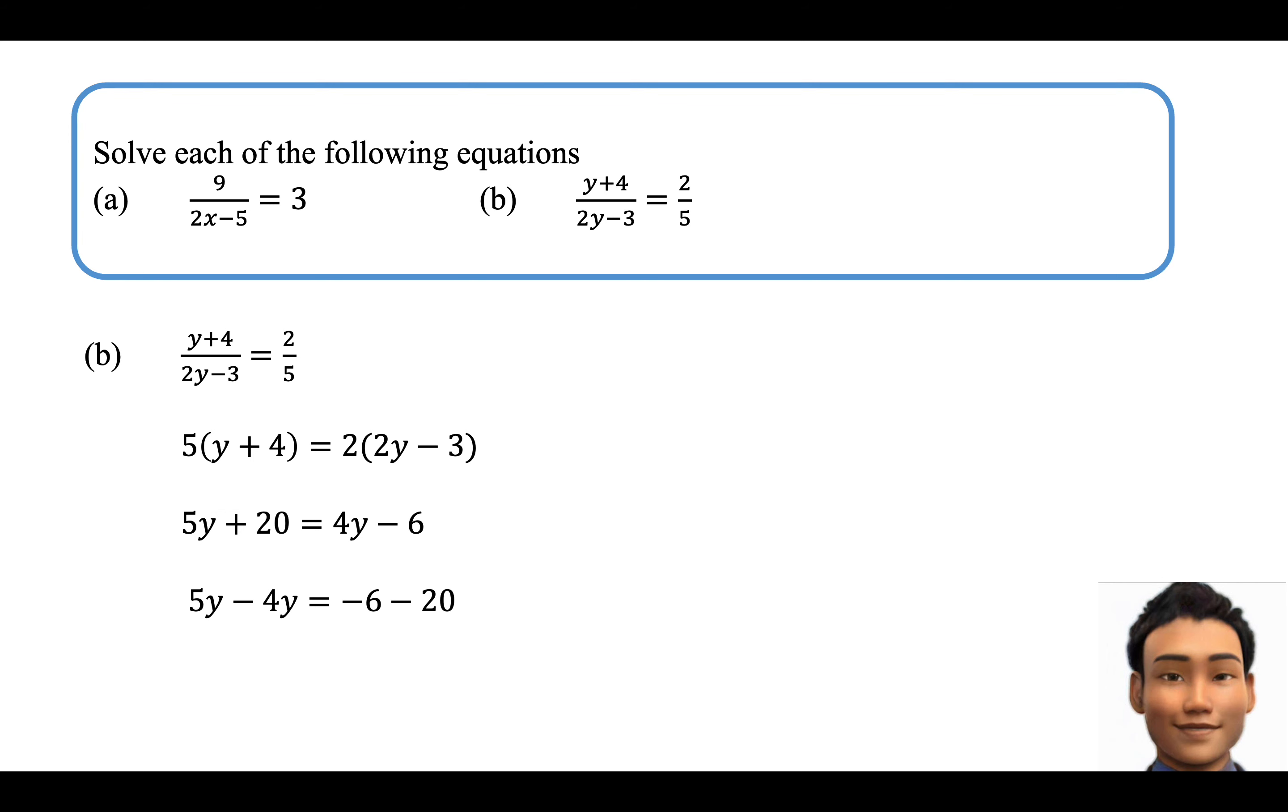Rearranging, 5y minus 4y equals to negative 6 minus 20, resulting in the answer y equals to negative 26.